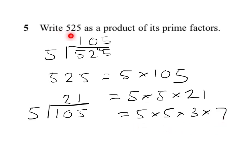So, the answer, 525, the product of prime factors, is 5 times 5 times 3 times 7. You can, if you like, write it in order, lowest number first, and use powers. But, it would be correct at that point. Thank you.